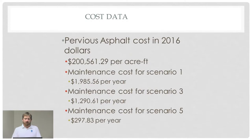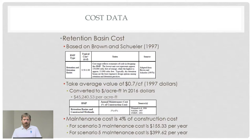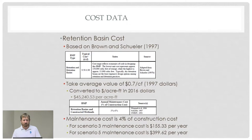If we convert everything over to 2016 dollars, we see the overall cost for scenarios 1, 3, and 5 are as shown on the screen. Next, we look at retention basin cost, which is also a value derived from the literature. The typical cost was about 50 cents to a dollar per cubic foot of storage provided, and this is in 1997 dollars. So we're going to bring it up to 2016 dollars and convert it over to cost per acre-foot of storage provided, which equates to a little over $45,000 per acre-foot. For this BMP, we're also assuming maintenance is about 4% of the construction cost, and for the different scenarios it's as shown here.